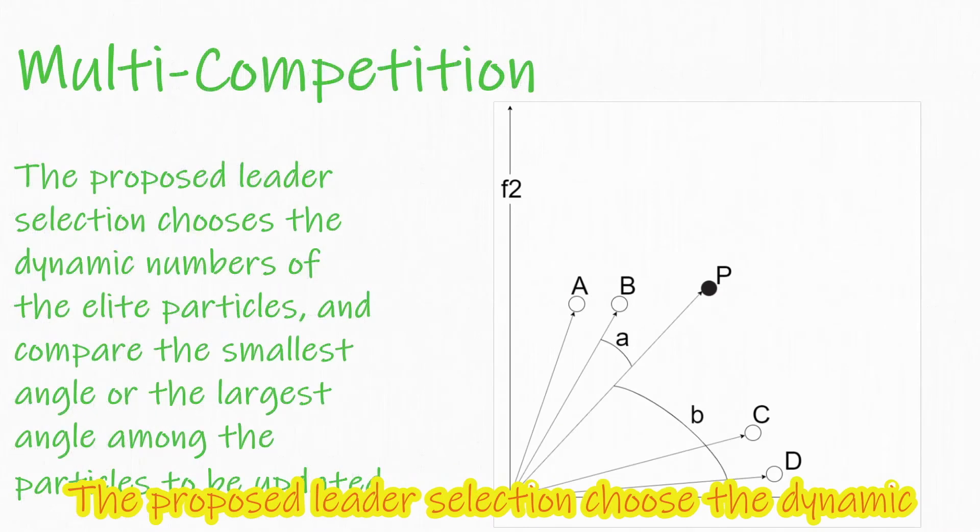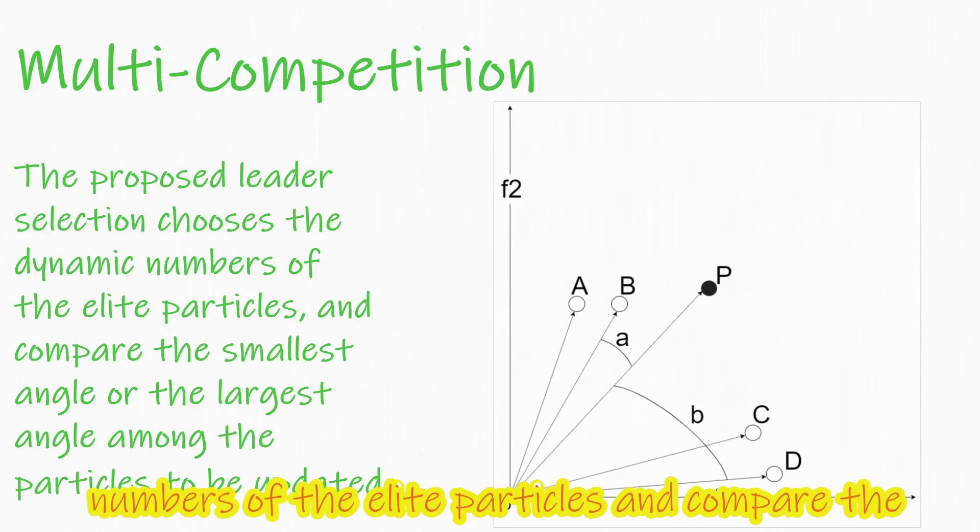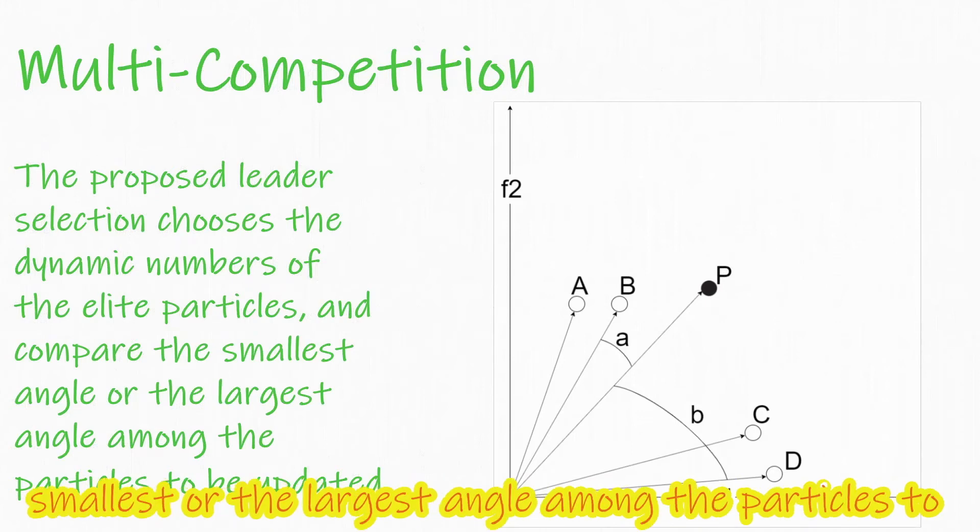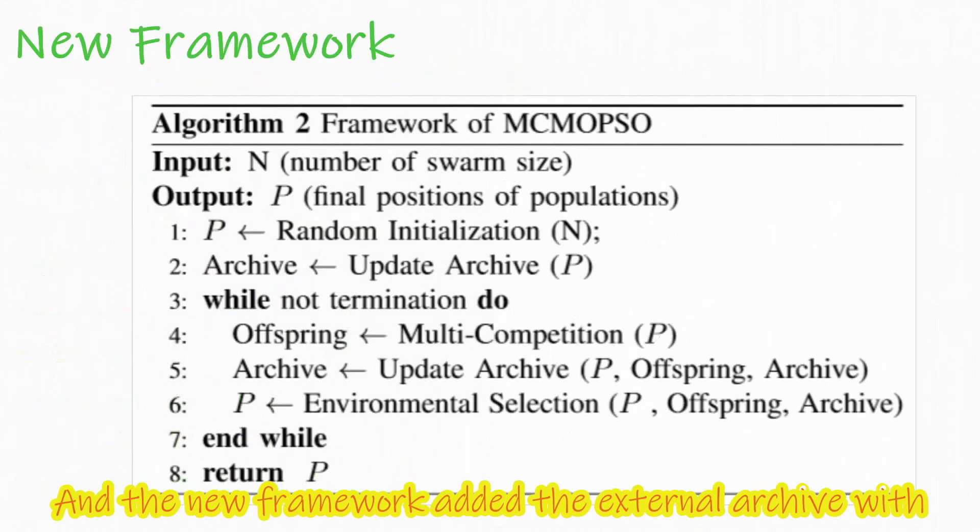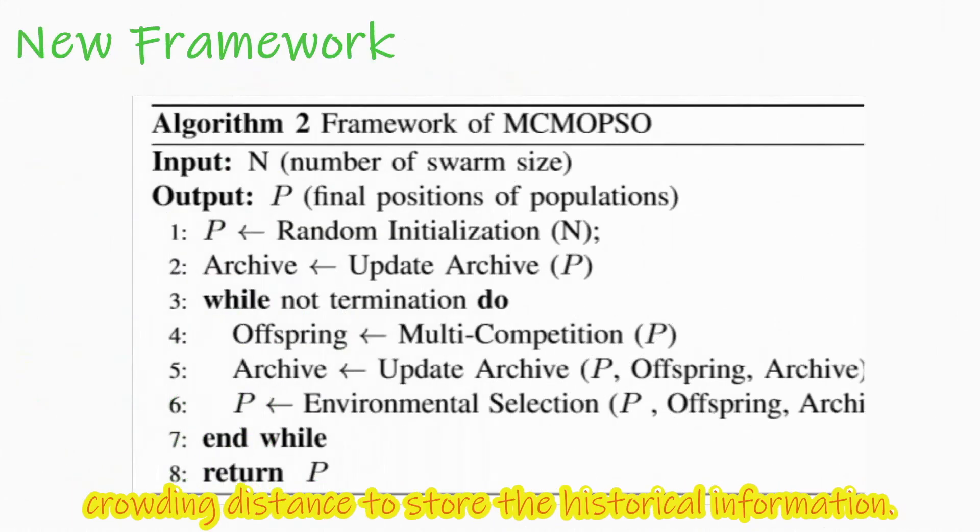The proposed leader selection chooses the dynamic numbers of the elite particles, and compares the smallest angle or the largest angle among the particles to be updated. And the new framework added the external archive with crowding distance to store the historical information.